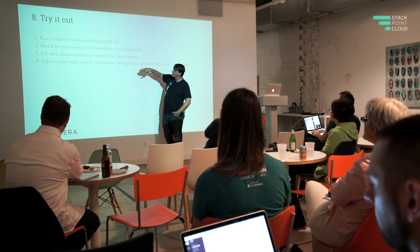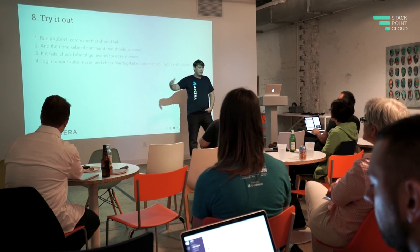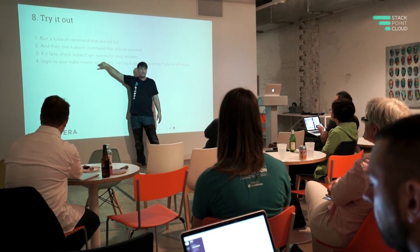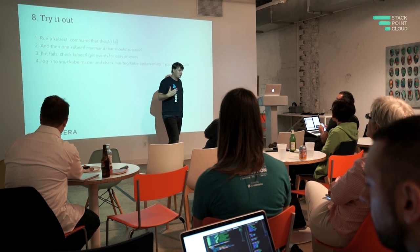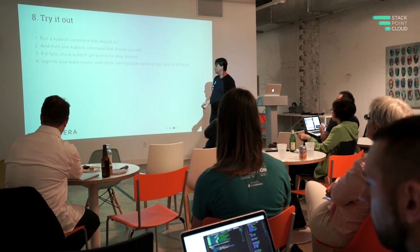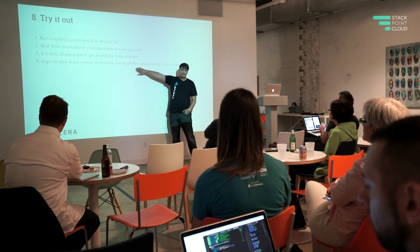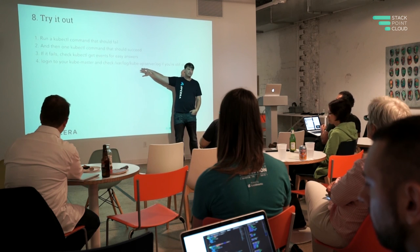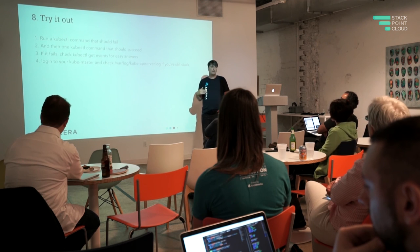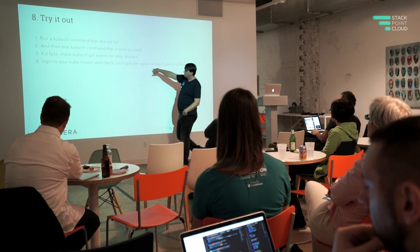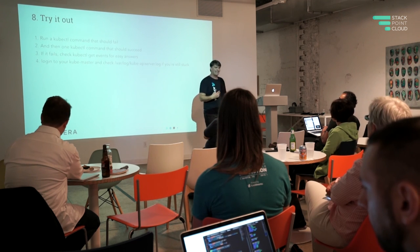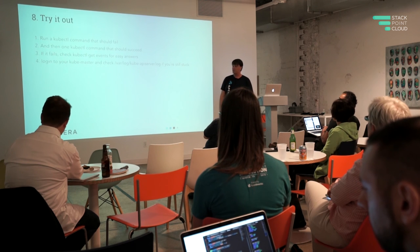Just walking through how to debug your admission controller: if you have a failure you can't explain when you go to create pods, first check kubectl get events — that will tell you what the platform is doing and the state of the pod. These admission controllers run inside the kube-api-server on your master. When you run the install it gives you the addresses of all your masters and minions, so go to var/log/kube-apiserver and look at the log file to see exactly what happened with your admission controller.